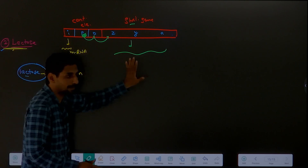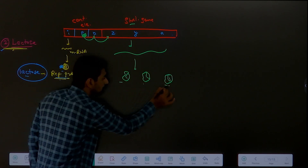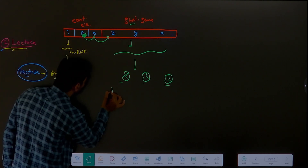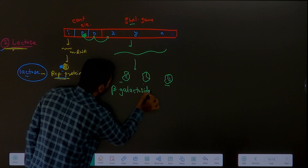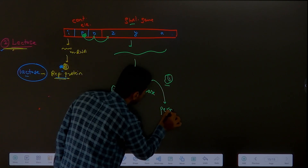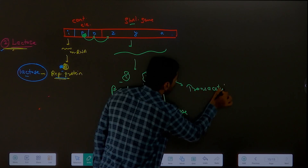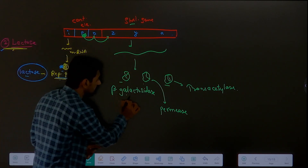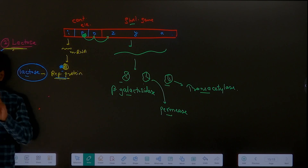After transcription, translation happens, and 3 enzymes are formed. These 3 enzymes are needed for lactose digestion. Z gene produces beta-galactosidase enzyme, Y gene produces permease, and A gene produces transacetylase enzyme. These 3 enzymes are required for lactose digestion. Once formed inside the bacteria, all the lactose that enters will be digested and the bacteria gets energy.